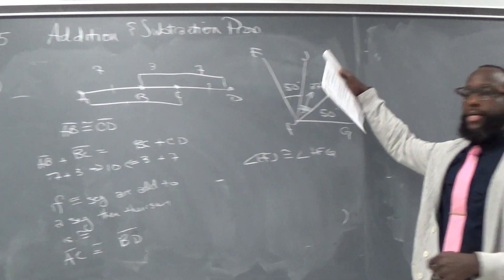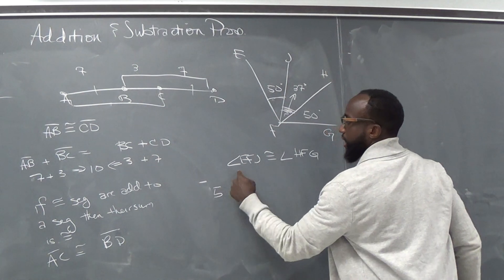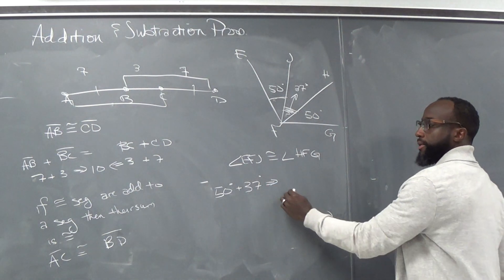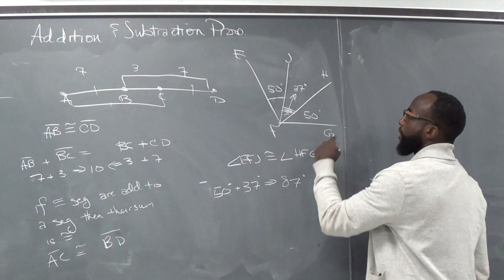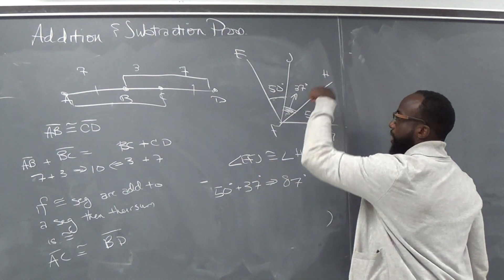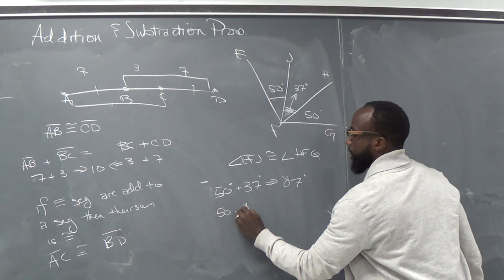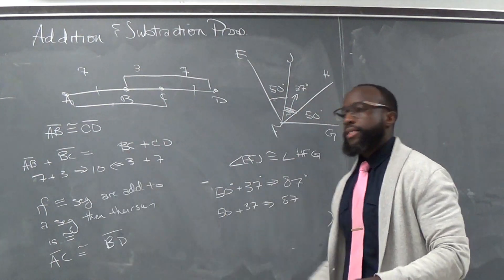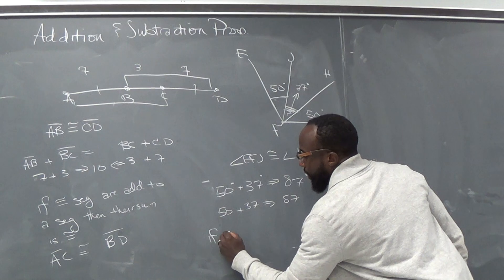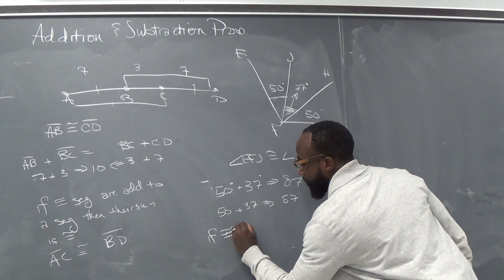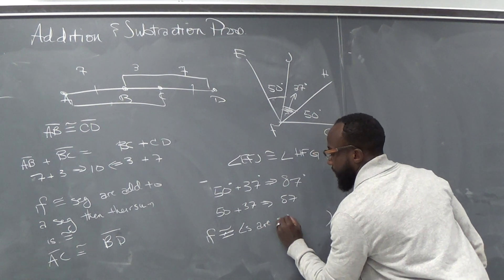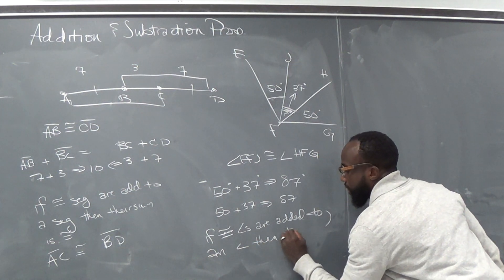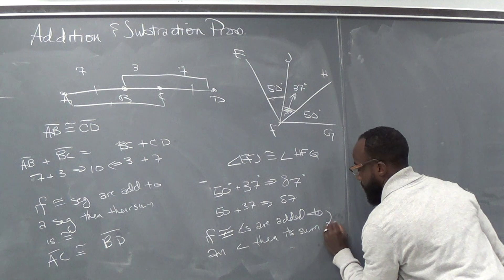So if this angle is 37 degrees, and I add EFJ — which is 50 degrees — plus JFH, which is 37 degrees, I'm going to get 87 degrees. If I do the same thing with the other one: HFG, 50 plus 37, that's also 87 degrees. So just like with segments, if congruent angles are added to an angle, then their sums are congruent.